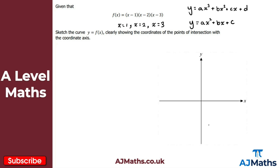The reason for that is because the y-intercept is when x is equal to 0, so all the x terms drop out and we're just left with d. To obtain this d without fully expanding, we can see that d will be equal to minus 1 times minus 2 times minus 3. Minus 1 times minus 2 is positive 2, times minus 3 gives us minus 6. So we've got everything we need to sketch this cubic.